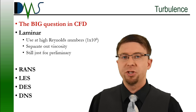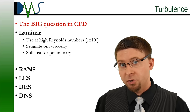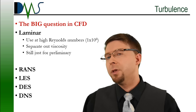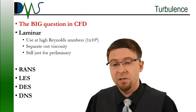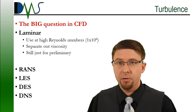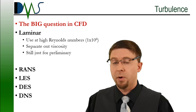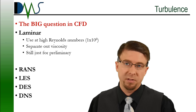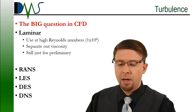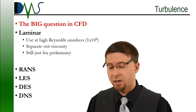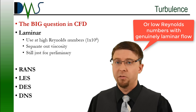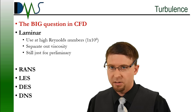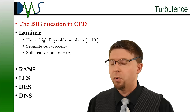Turbulence — this is the big question in CFD. If you're not sure what differentiates the different types of CFD methods and softwares out there, it's turbulence. Turbulence makes all the difference in terms of price. One option a lot of people overlook is laminar — not something you'd use for an accurate solution, but for preliminary cases at high Reynolds number situations running lots of fast iterations. The main turbulence methods are RANS, LES, DES, or DNS. Those are the big boys, and this is what we're really talking about when we talk about CFD.